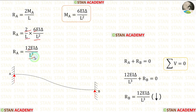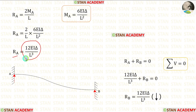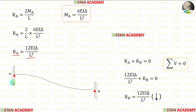L into L² we will get L³. So, for RA, we are getting 12EI·delta/L³. For RA, we got a positive value. That means our assumption is correct — it is acting upwards.